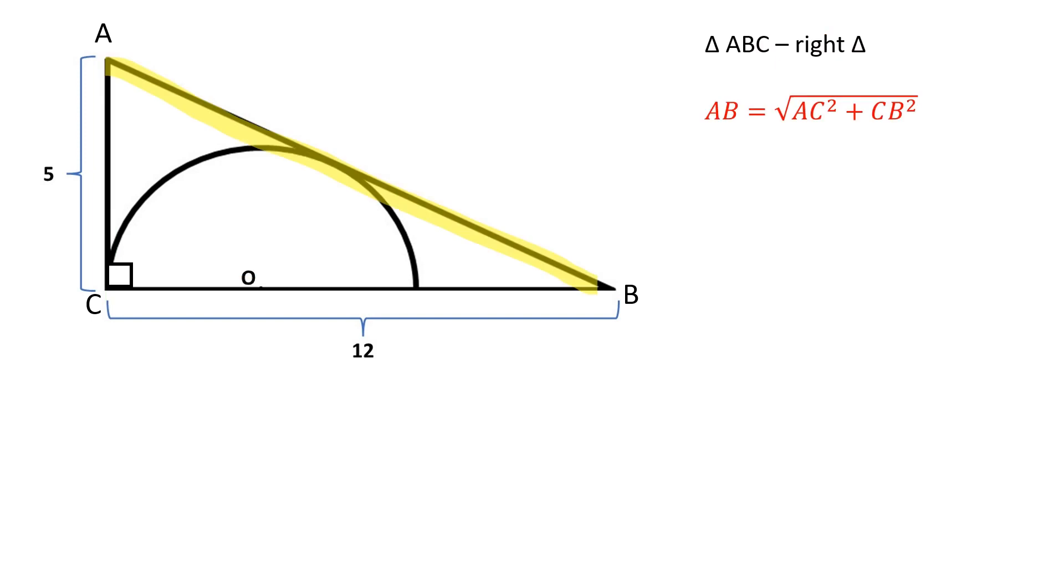We can find AB using the Pythagorean theorem. AB is equal to 13.